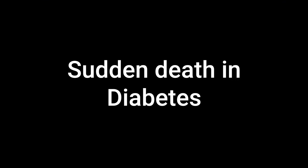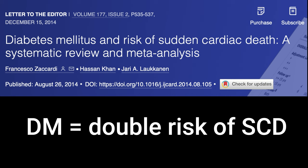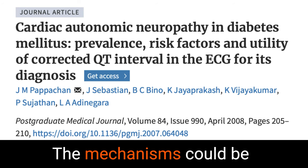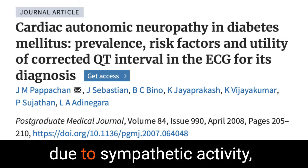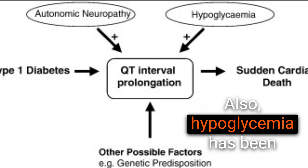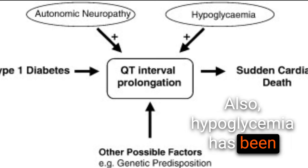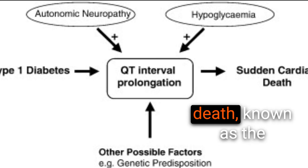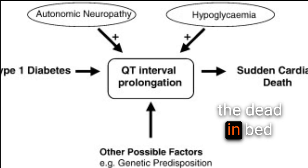Let's move into ventricular arrhythmia and sudden death. The risk of sudden cardiac death is twofold higher in patients with diabetes. The mechanisms could be due to sympathetic activity, cellular calcium overload, or other mechanisms. Also, hypoglycemia has been associated with nocturnal death, known as the dead-in-bed syndrome in type 1 diabetes.